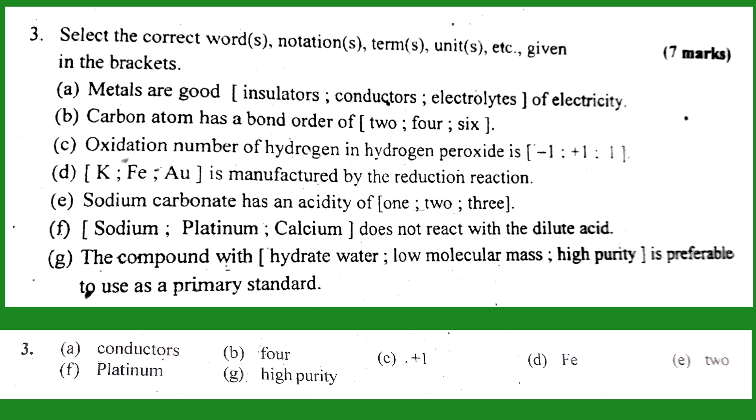Number B: carbon atom has a valency of four. The correct answer is four. Number C: oxidation number of hydrogen in hydrogen peroxide is +1. Hydrogen peroxide is H₂O₂. The oxidation number of hydrogen in hydrogen peroxide is +1.